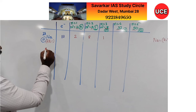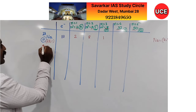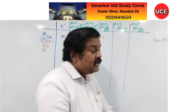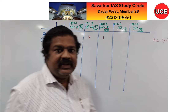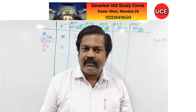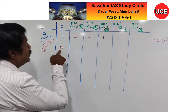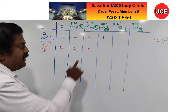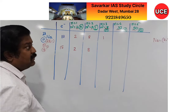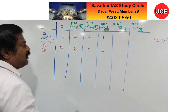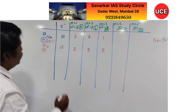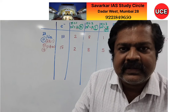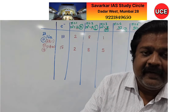Now let us check phosphorus: atomic number 15, mass number 31. Try pausing the video and working it out yourself. Phosphorus has 15 electrons. First shell: 2 electrons. Second shell: 8 electrons (2 + 8 = 10, remainder 5). The third shell can hold up to 18, so we place 5 electrons there. The electronic configuration of phosphorus is 2, 8, 5.